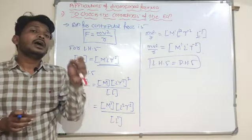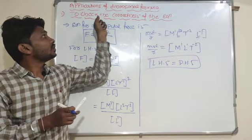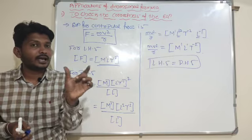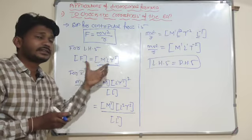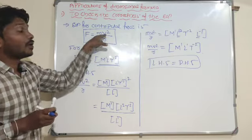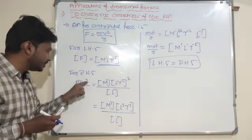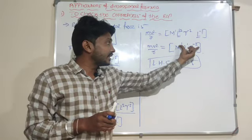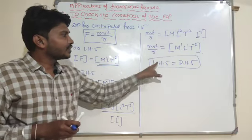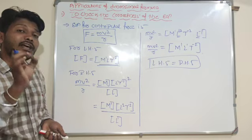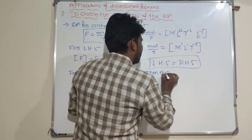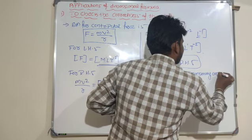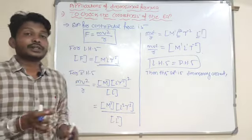So this is the way to check the correctness of the given equation — first write the dimensional formula for the left hand side term, then for the right hand side terms. If both are equal, the equation is dimensionally correct.